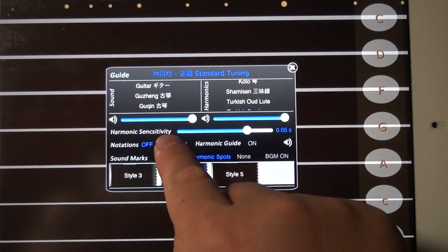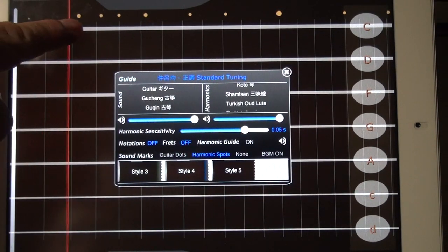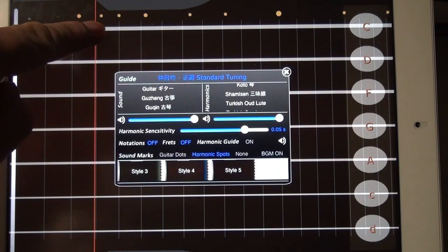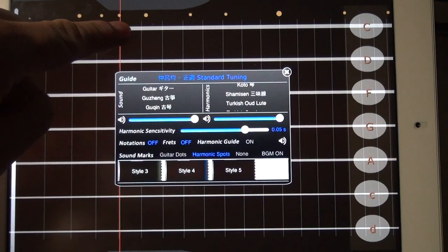You can turn on the fret lines, guitar fret lines, so very good for guitar players. Just align your finger, that red line, with these fret lines, and you're at the right pitch.